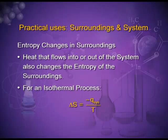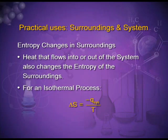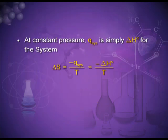If a system loses heat, then the surroundings gain the heat and the entropy of the surroundings increases. Delta S surroundings equals minus Q system upon T. Heat that flows into or out of the system also changes the entropy of the surroundings. For an isothermal process, entropy change of the surroundings equals minus Q system upon T, and at constant pressure, Q system is simply delta H for the system. Therefore, delta S surroundings equals minus delta H upon T.